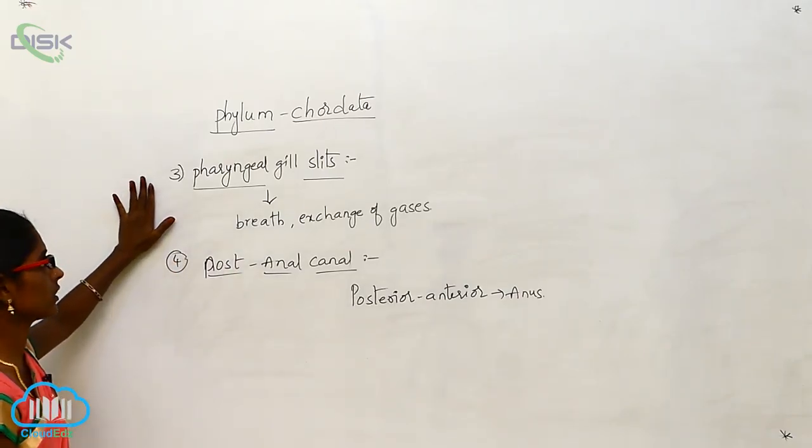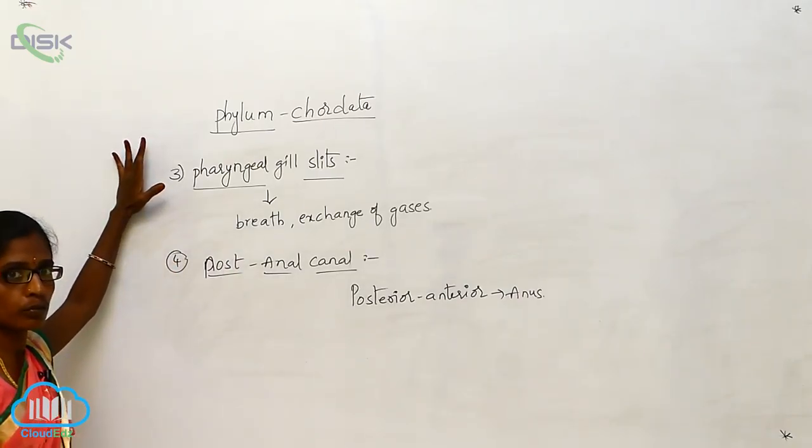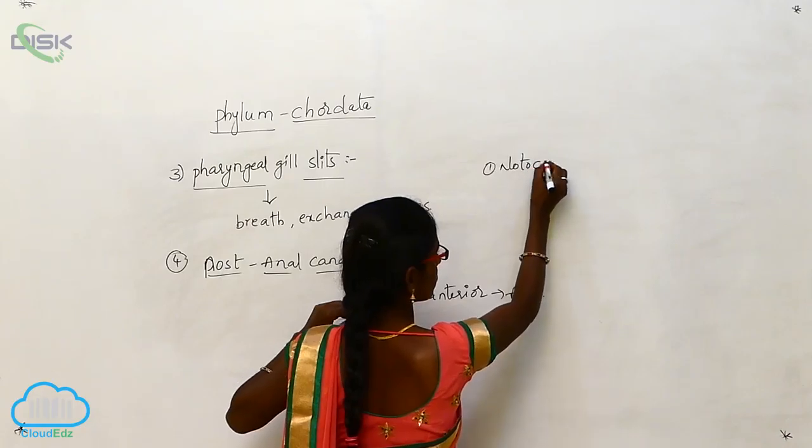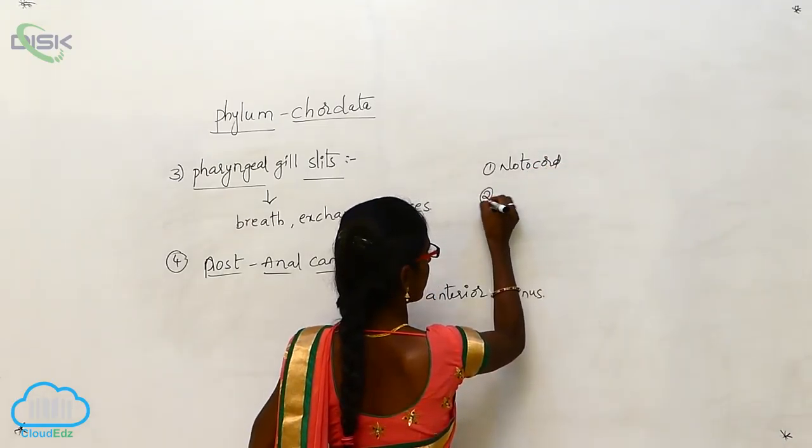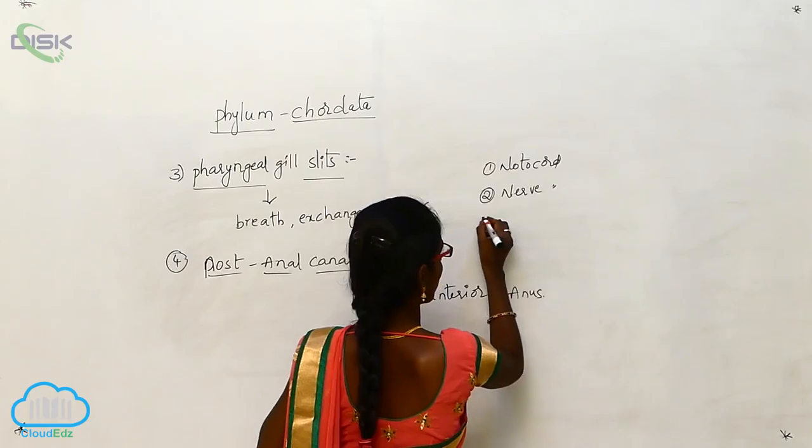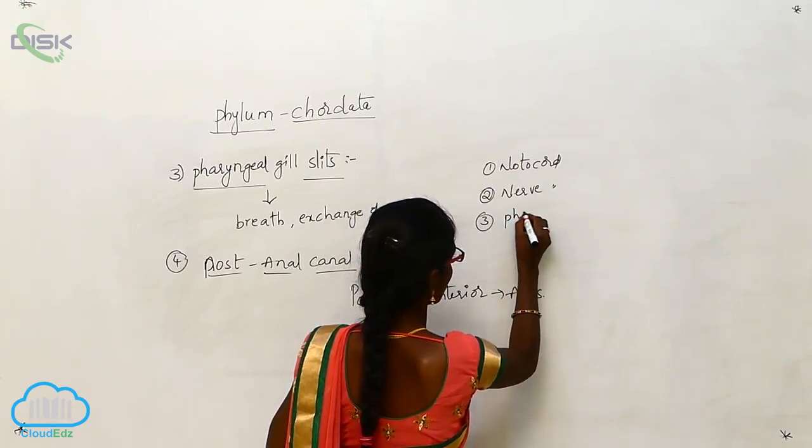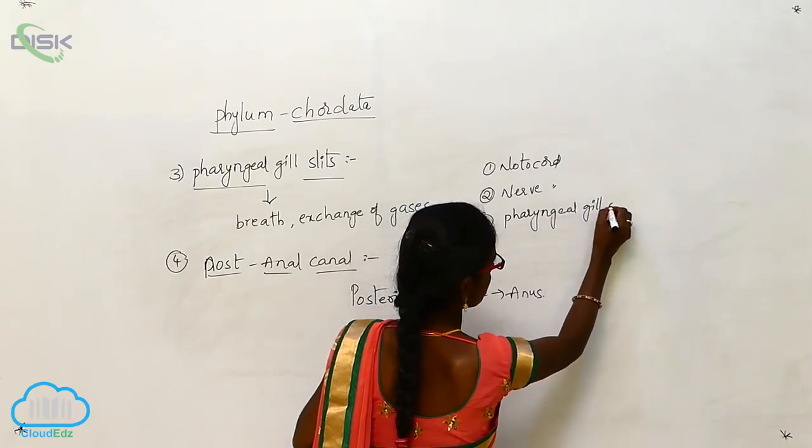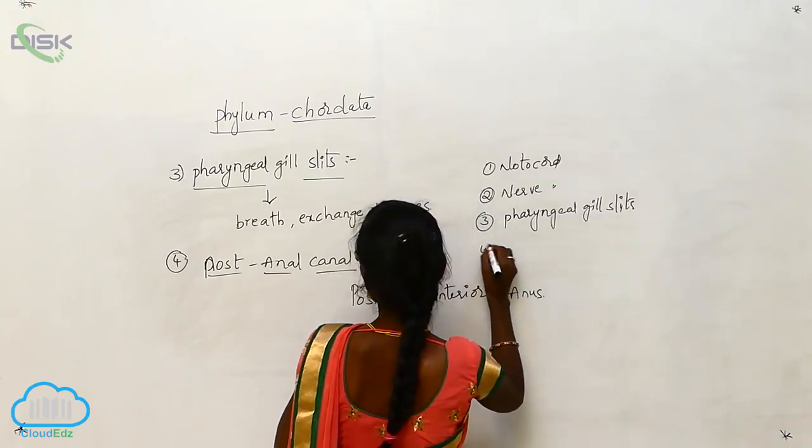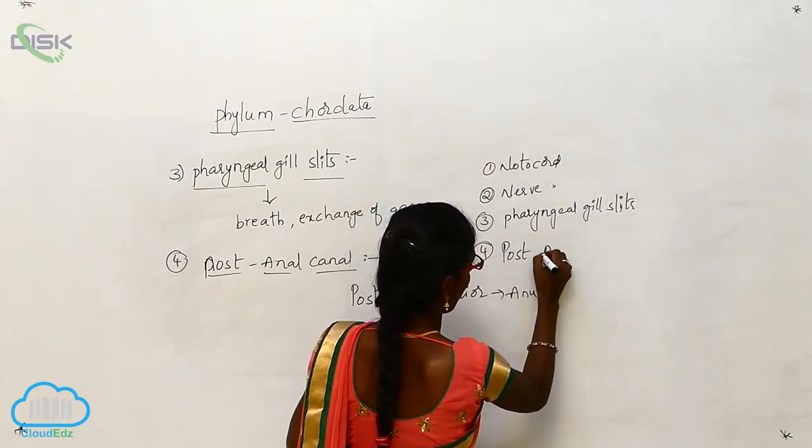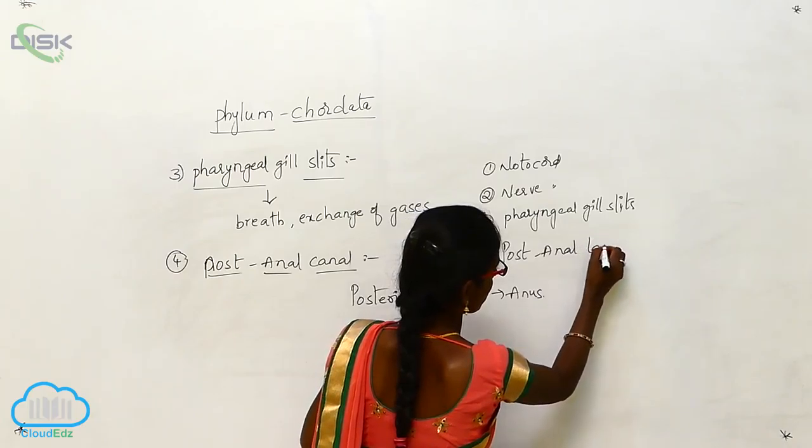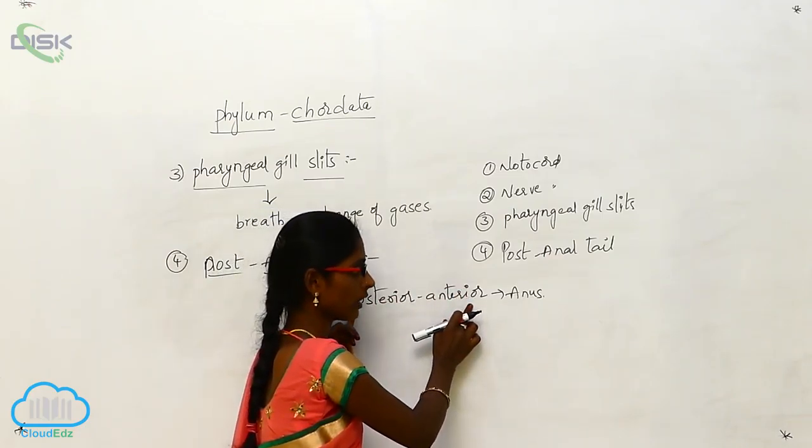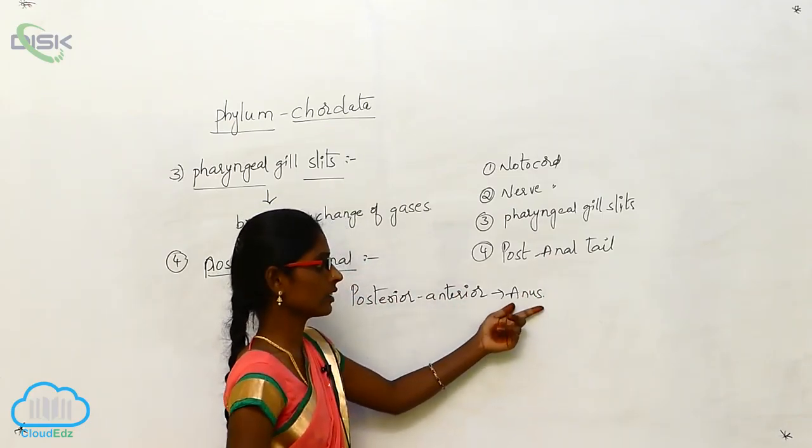So these are the four important characters. Phylum Chordata includes four characters. First one is notochord. Second one is nerve chord. Third one is pharyngeal gill slits. And fourth one is post anal tail. It will posterior extend from the posterior to the anus.